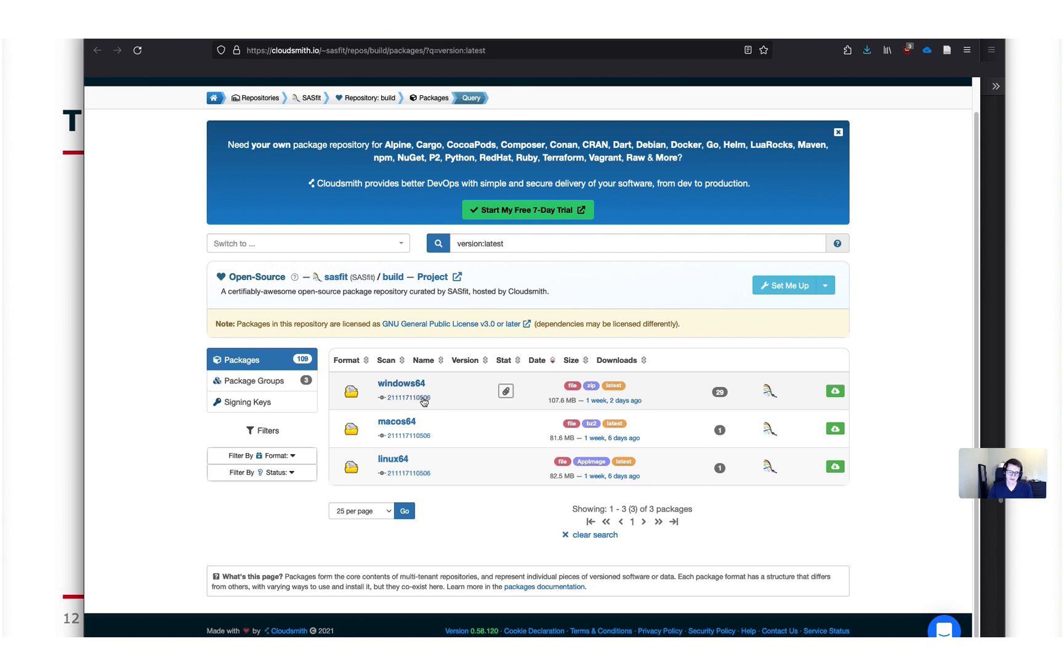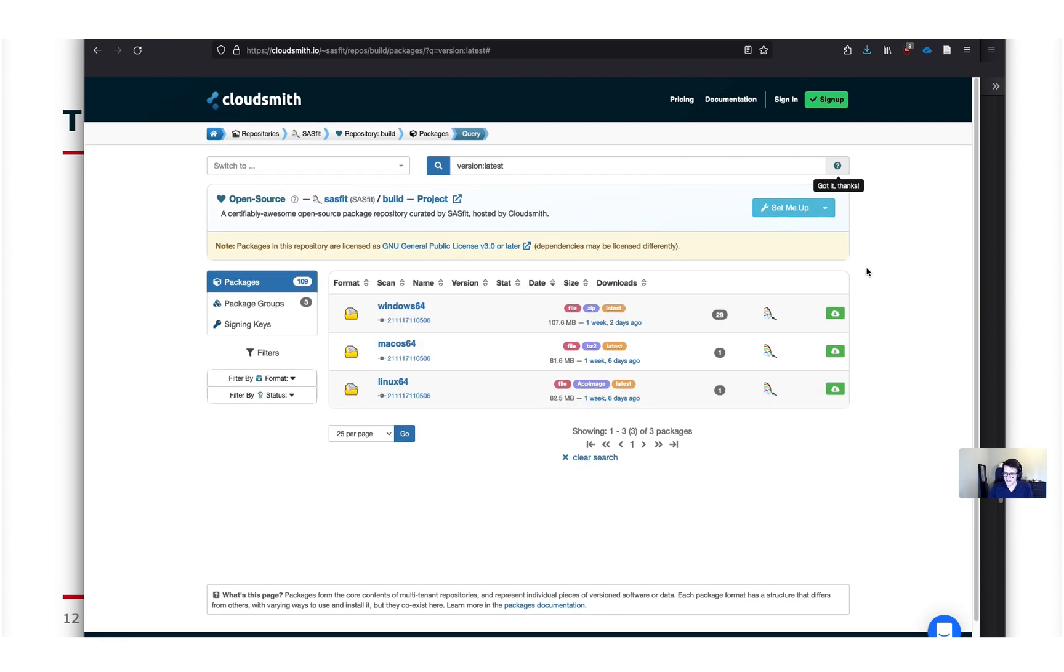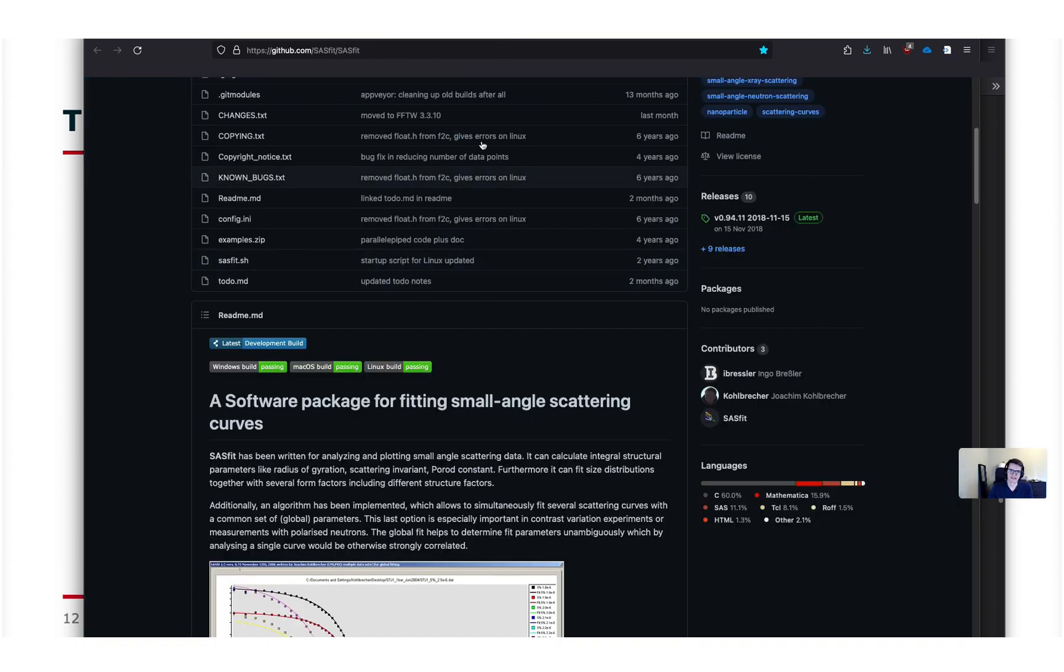The latest build of the development versions are uploaded here. This means that sometimes they might have issues or still some problems. But in this case just pick an older version. It's just because these builds are done automatically when something in the source code is changed. If you want to be safe just pick the latest stable release here on the main page.